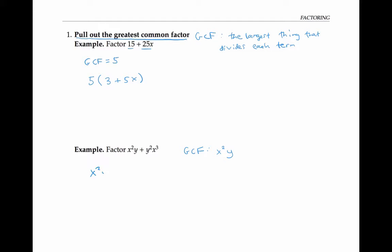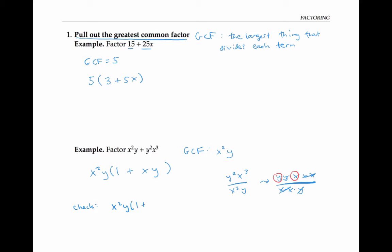Now if I factor out x squared y from each of the terms — that's like dividing each term by x squared y — if I divide the first term by x squared y, I just get one. If I divide the second term, y squared x cubed over x squared y, that's two y's and three x's on top and two x's and a y on the bottom, so I'm left with just an x and a y. So I write xy here, and I've factored my expression. I can check by multiplying out: x squared y is the first term, and the second term gives x, with three x's and two y's, which checks out.